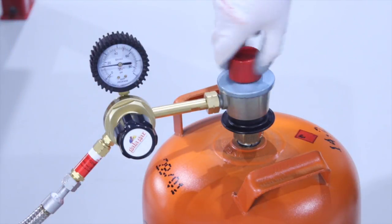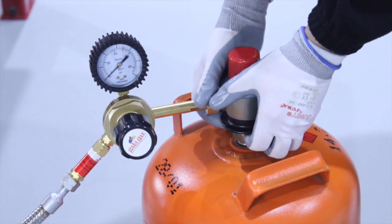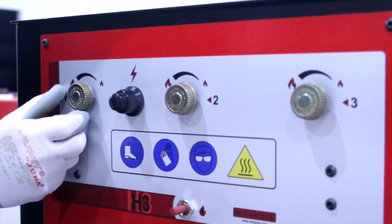Pour éteindre le four, on ferme le robinet de l'adaptateur de la bouteille. Quand la flamme s'éteint, on enlève l'adaptateur et on ferme les vannes afin de libérer toute la pression du circuit de gaz.